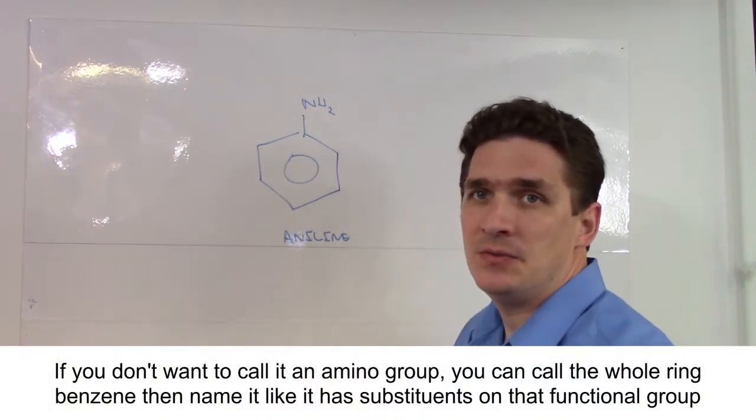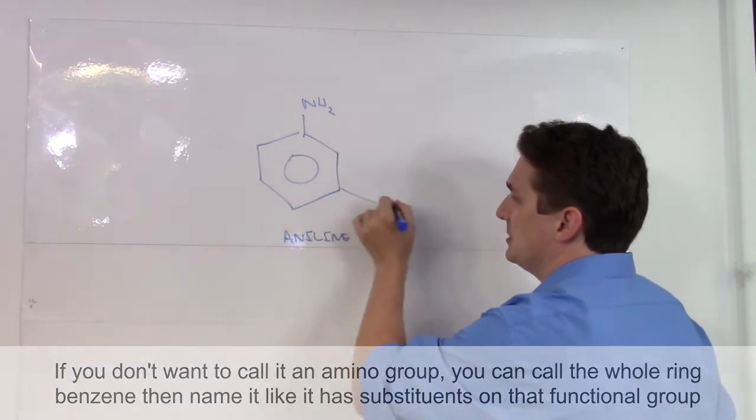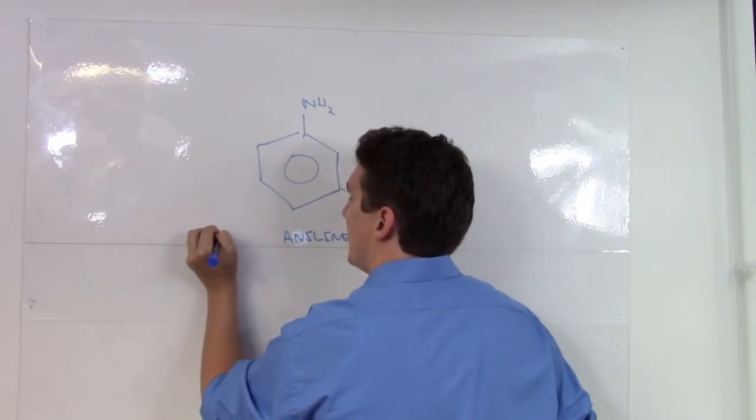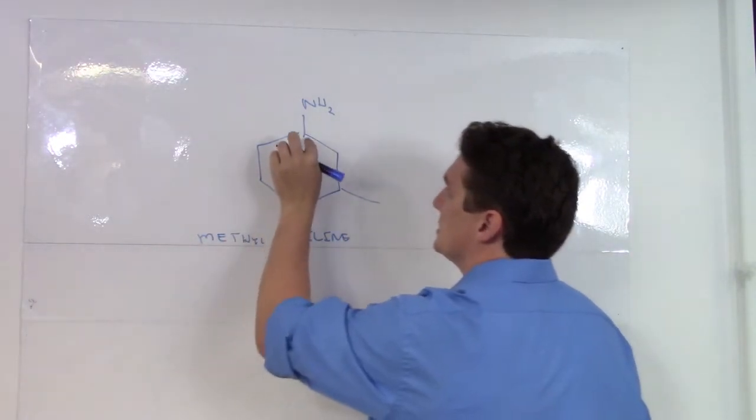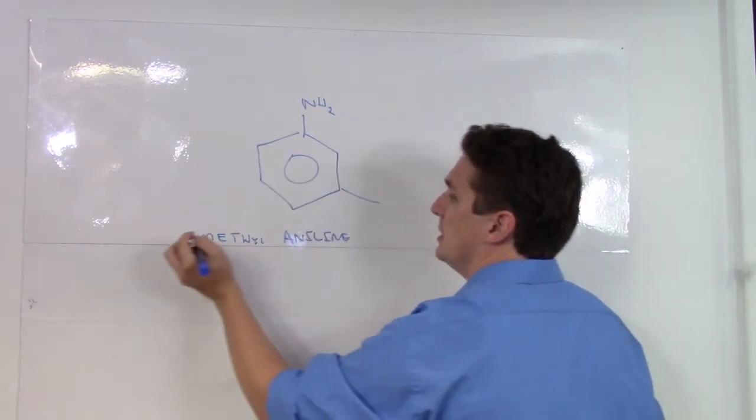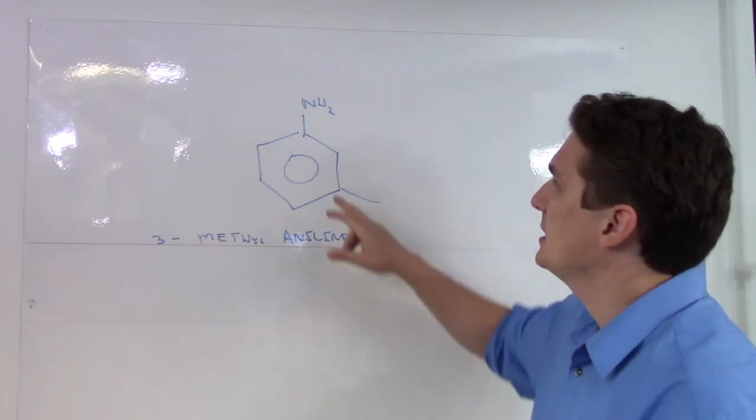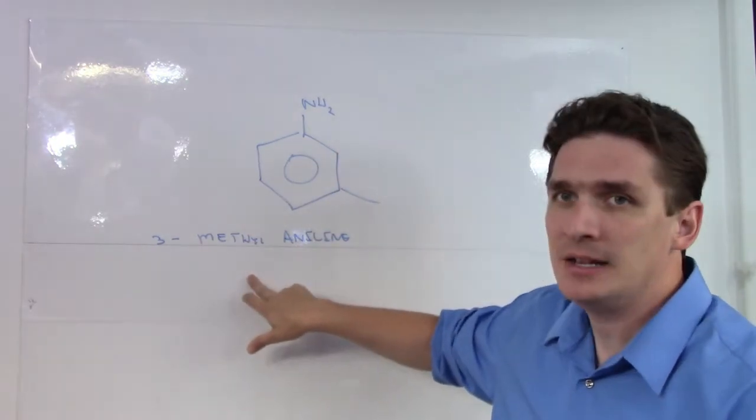And to specify anything else, if we've got one group, let's say we put on a methyl here, we can specify it either with a number. So in this case nitrogen is 1, 2, 3, 3-methyl, or we could do the ortho-meta-para in this case. This would be meta-methyl-aniline.